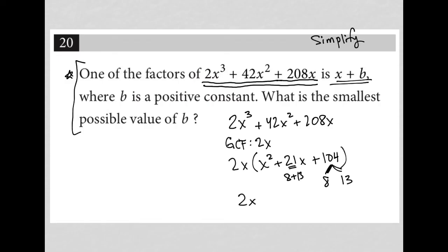So we'd be left with 2x, and then (x + 8) and (x + 13). The question wants to know what is the smallest possible value of b. Well, b could be 13 or it could be 8. The smaller of the two is 8. So our answer here is 8.